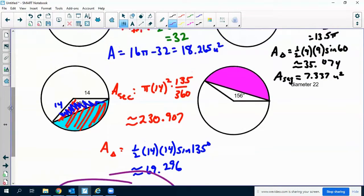Finally, the fourth problem. The area of the sector is π times 11, so the radius is 11, π times 11² times 156 over 360. I get 164.724 units squared.